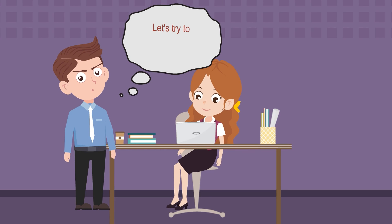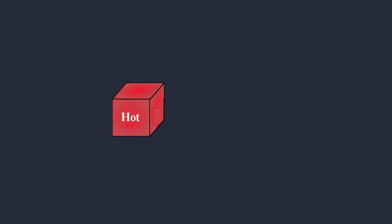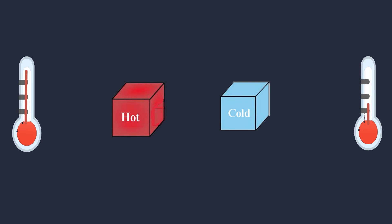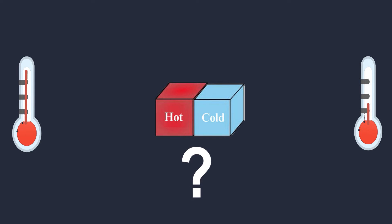Let's try to understand heat with an example. There is a hot block and a cold block. The hot block temperature is very high and the cold block temperature is very low. We will measure the temperature of both. Now if we touch the hot block and cold block, what will happen to the temperature? How will the energy flow — is it from the hot block to the cold block, or cold block to hot block?